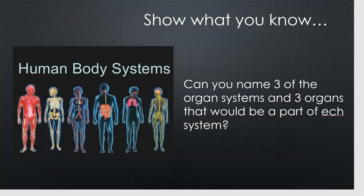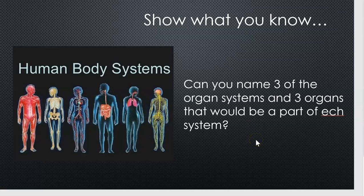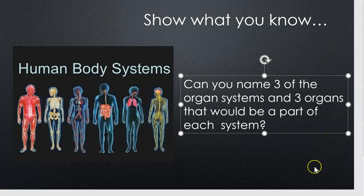I'd like you to go back and show what you know. Here I've shown an image of different human body systems. I want you to name three of the different systems, and then for each of those systems, remember three different organs that would be part of each system. So you're going to name three different organ systems and then three organs for each of those systems. That's how you're going to show what you know. Good luck.